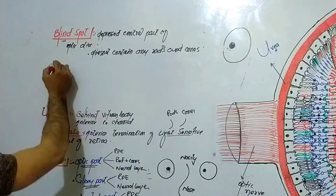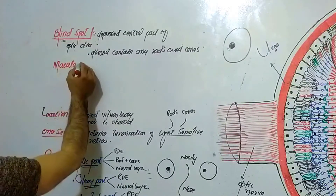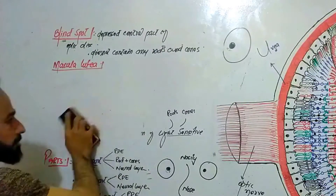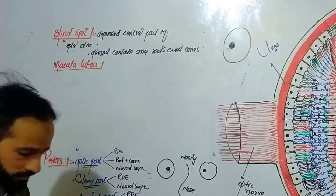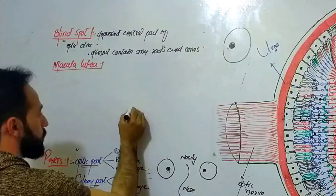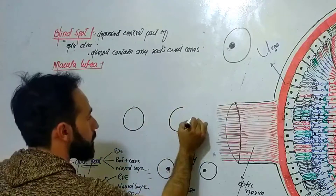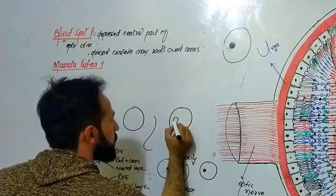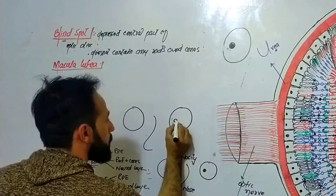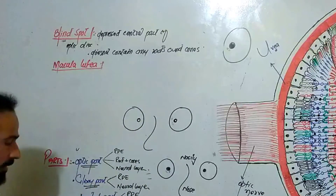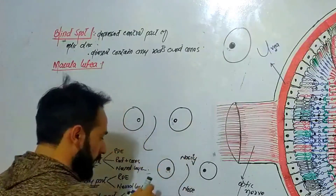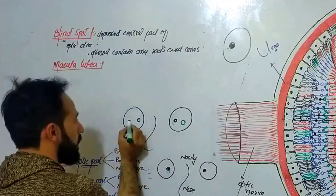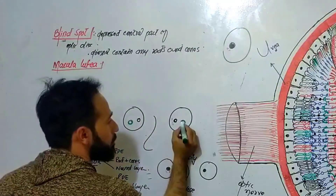The next important point is the macula lutea — 'lutea' means yellow. Looking at the two eyes with the nose between, nasally you will see a depression called the optic disc. Then a little bit lateral and inferiorly you will see another depression, and this depression is called the macula lutea.